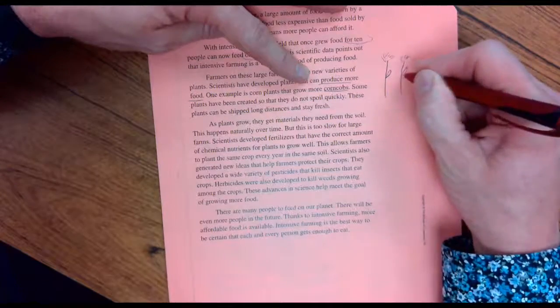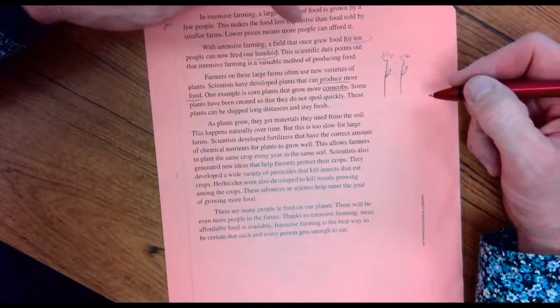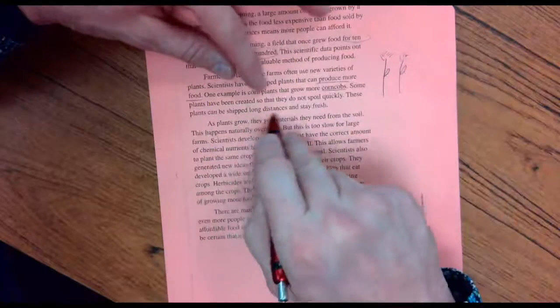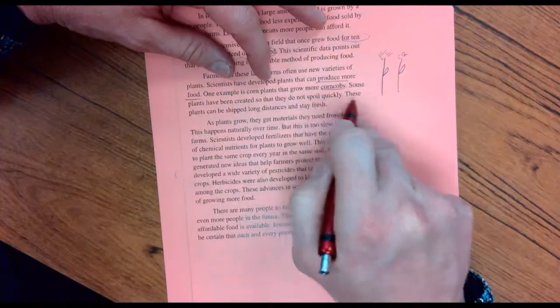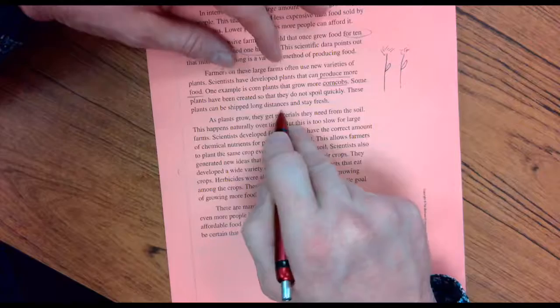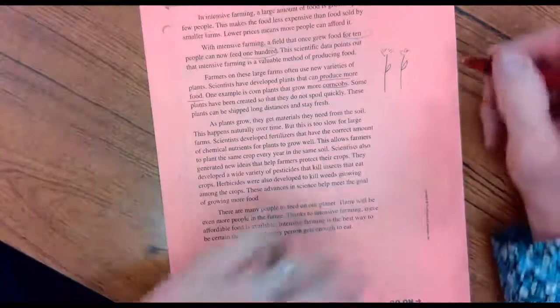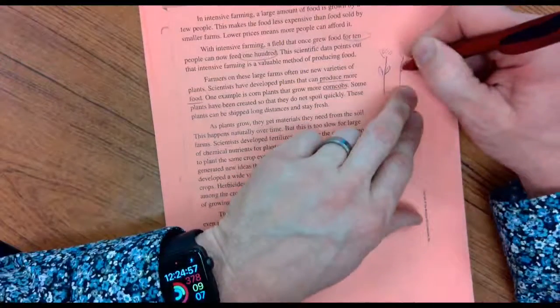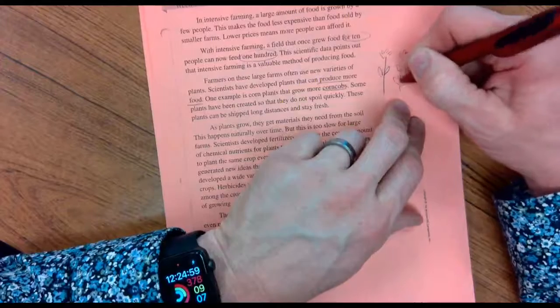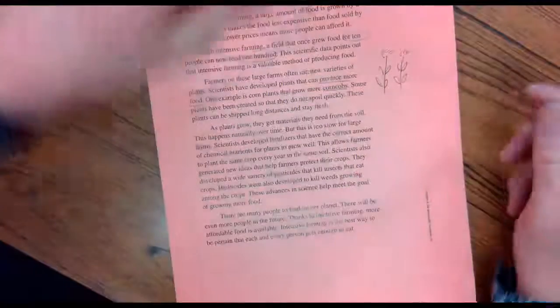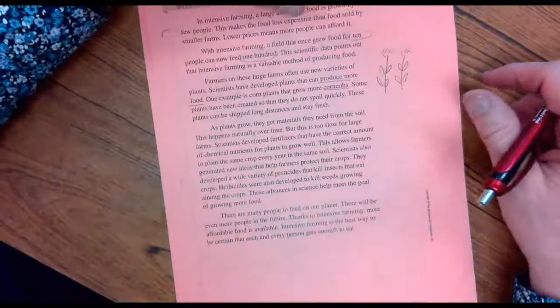It used to be that one corn plant would produce one cob. Some plants have been created so they do not spoil quickly. These plants can be shipped long distances and stay fresh. Can you imagine if each plant grew two or four cobs? That would give you four times as much food in the same amount of soil.